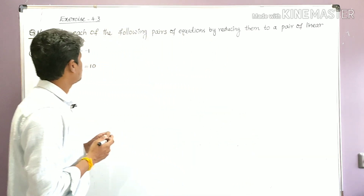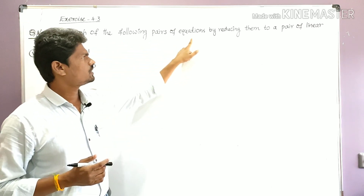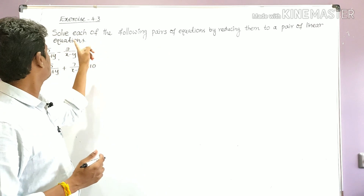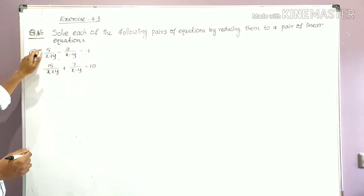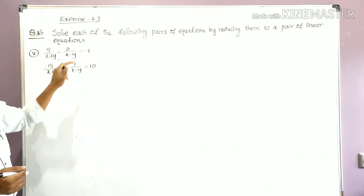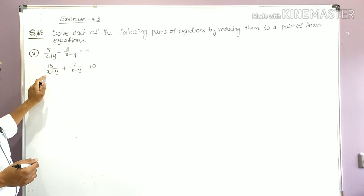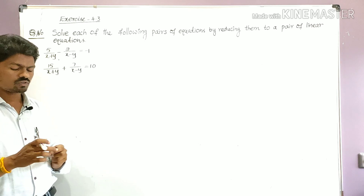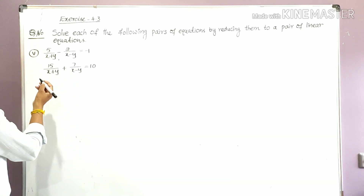Here is the problem: Solve each of the following pairs of equations by reducing them to a pair of linear equations. The 5th problem gives us: 5/(x+y) minus 2/(x−y) equals −1, and 15/(x+y) minus 7/(x−y) equals 10. We need to find the solution for these two equations.